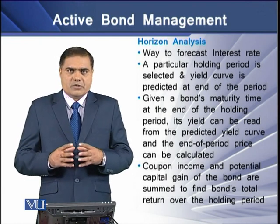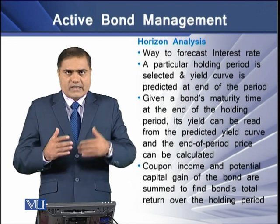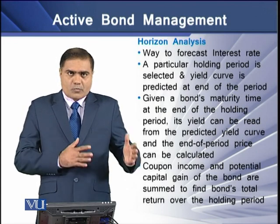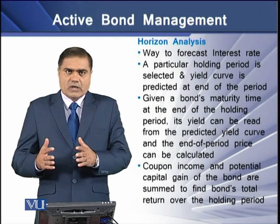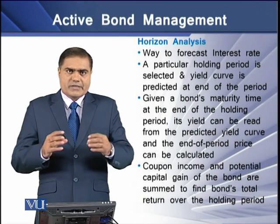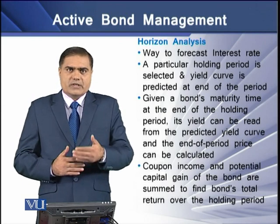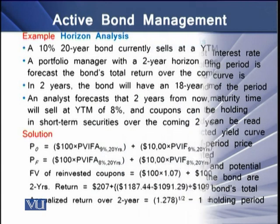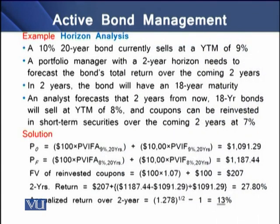Once the price and yield are determined, we add up the coupon income and the potential capital gain to determine the total return on the bond over its life. In the horizon analysis example, a 10% 20-year bond currently sells at a YTM of 9%. A portfolio manager with a 2-year horizon needs to forecast the bond's total return over the coming 2 years, at which point the bond will have an 18-year maturity.